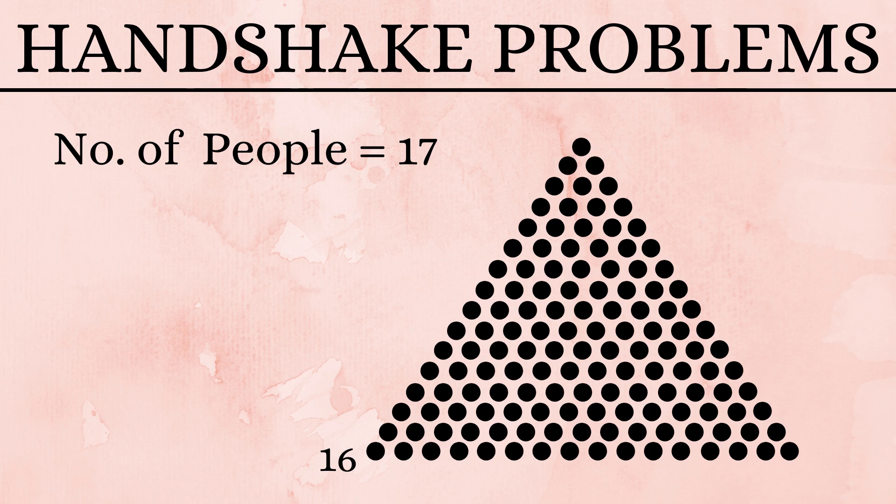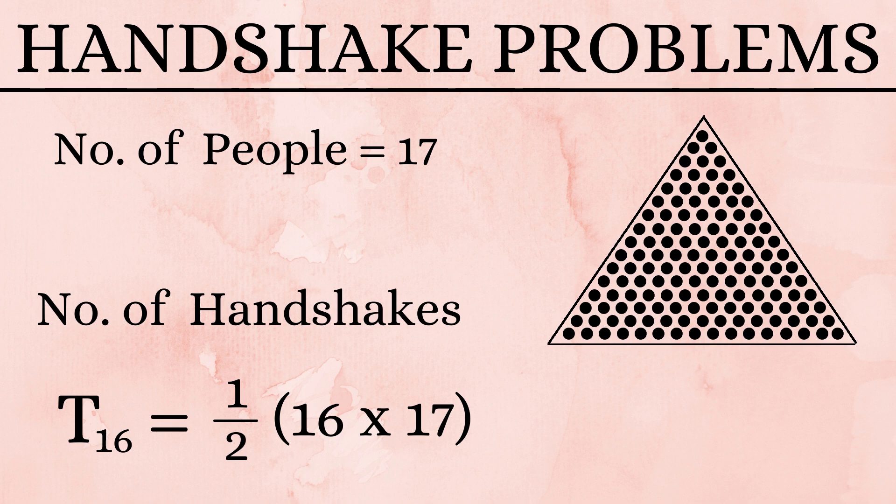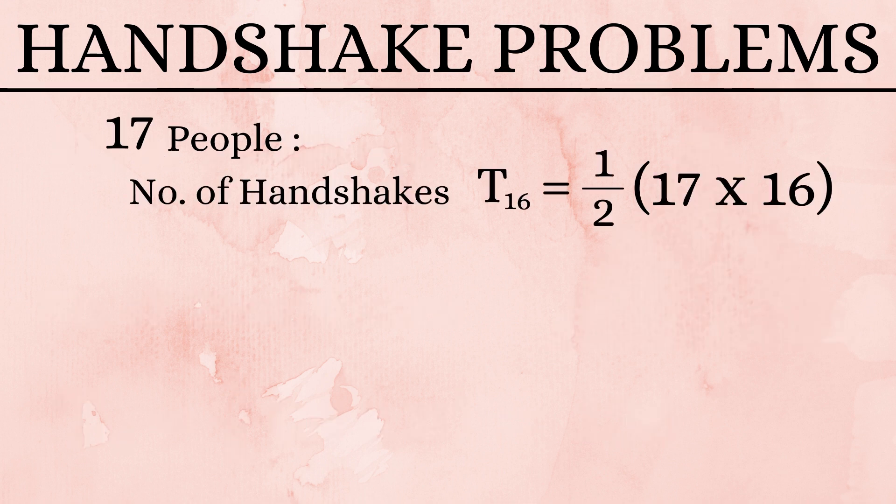This will continue till only two people are left out to do the final handshake. Thus, for 17 people, the total number of handshakes will be equal to the 16th triangular number, which is half of 16 into 17, which in turn is 136.